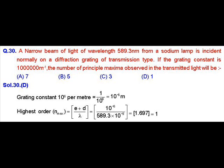As we know, the grating constant is given as 10 raised to the power 6 per meter. The grating constant can be calculated as 1 upon 10 raised to the power 6, which is equal to 10 raised to the power minus 6 meters.